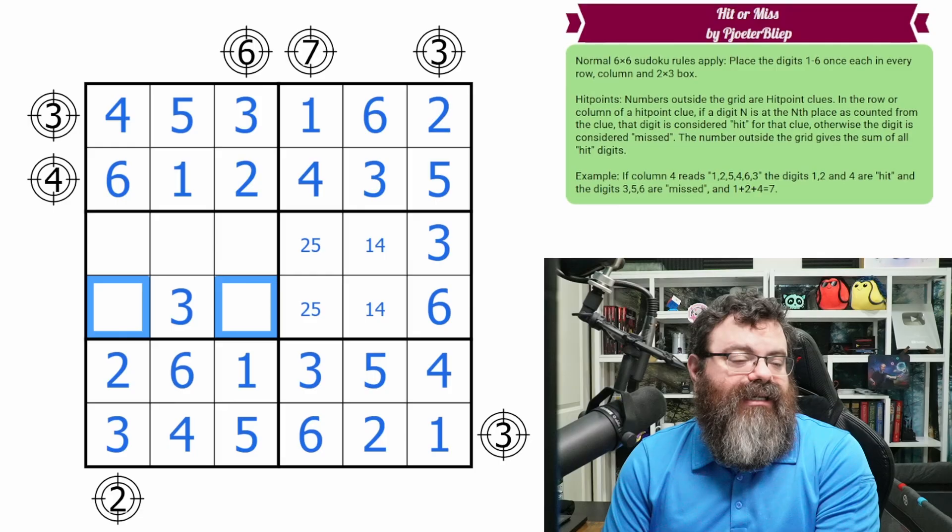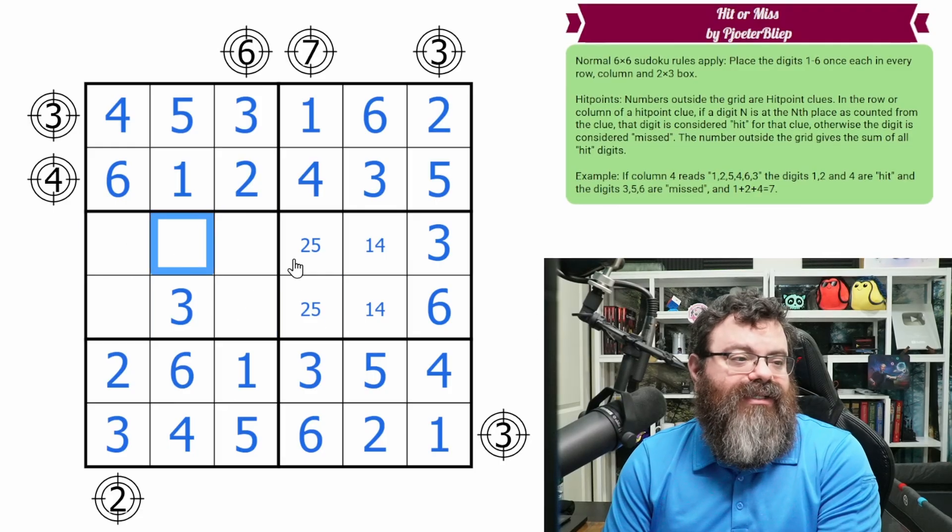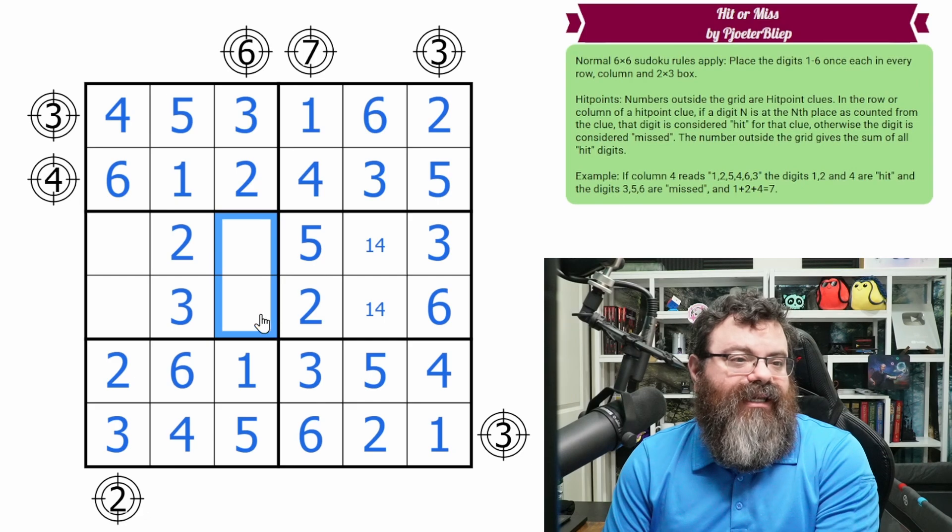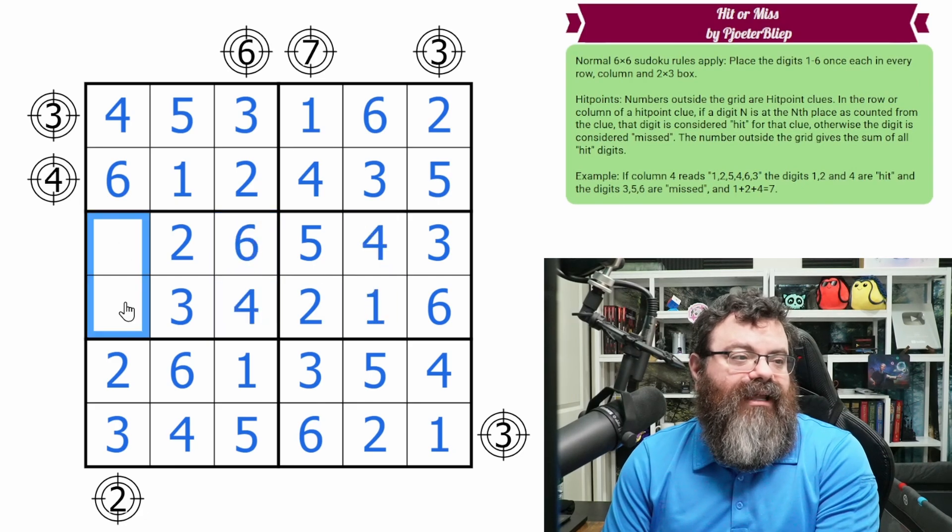Down here, what do we need here? Let's do the columns with this one here. This is a two, making this five and two. Here we need a four and a six, that's four, that's six, that's one, that's four. And over here we need a one and a five. All right.